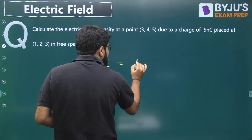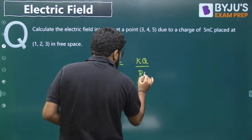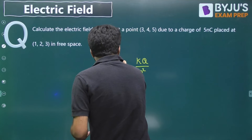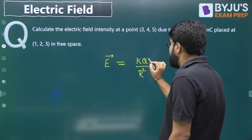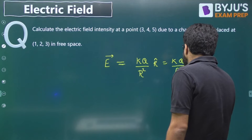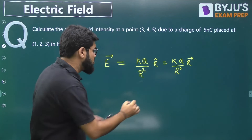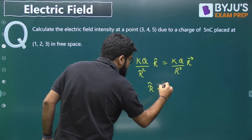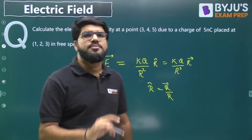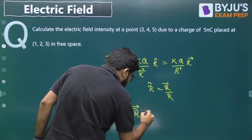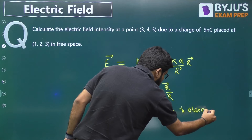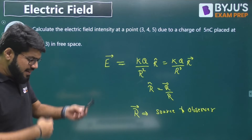We know that the electric field magnitude, as already explained, is given by KQ by R square. The vector form of electric field — since it comes from Coulomb's Law — is given by KQ by R square into r̂, which can also be written as KQ by R cube into the vector r, because r̂ is always vector r divided by its magnitude. Vector r is the vector joining the source point to the point of observation — from the source to the point of observation.